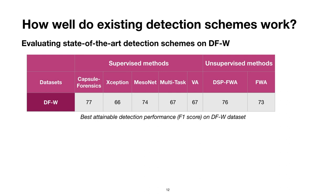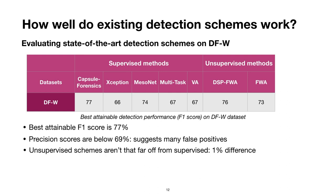Note that higher values are better, and this table shows detection performances of each scheme on the DFW dataset. We observed that all the F1 scores do not exceed 77%. The best method is Capsule Forensics. Additionally, precision scores are lower than 69%, which also suggests a large number of false positive misclassifications.